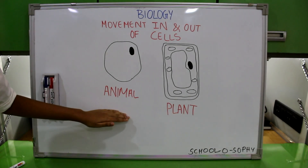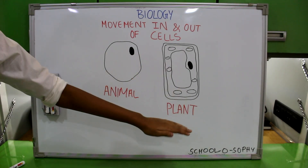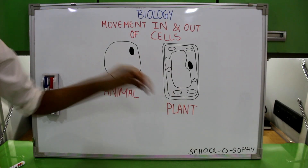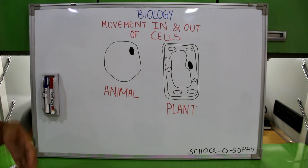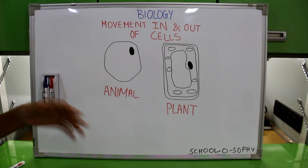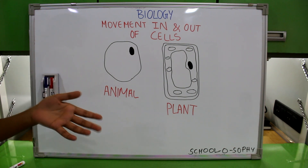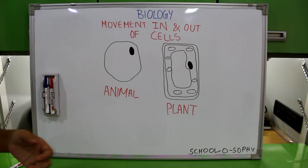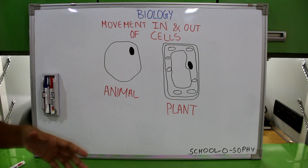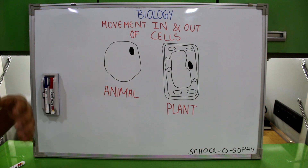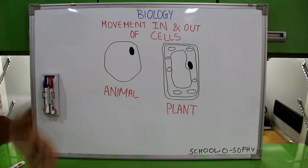I am going to talk about diffusion. This is a typical animal cell and this is a typical plant cell. Cells are the smallest unit of life, and cells make up tissues, tissues make up organs, and they make up the organisms. We are going to speak about cells in detail in another video, and today we are going to talk about diffusion.